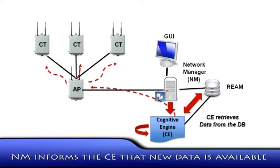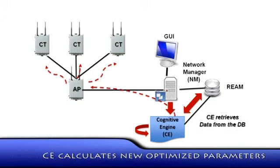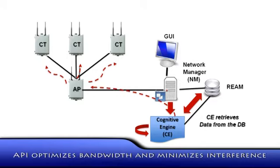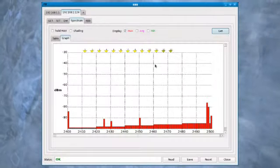Once the interference information has been stored in the relational database, the network management station will inform the cognitive engine that new data is available about the network. The cognitive engine can then recompute the different parameters for the operation of the wireless network and then use the API provided by the network management station to tweak the different controls in the network to optimize bandwidth and minimize interference. The network management station also provides a graphical user interface so a network operator can look at the different aspects of the network and manually control the operation of the network. Here's a screenshot of what the GUI looks like.